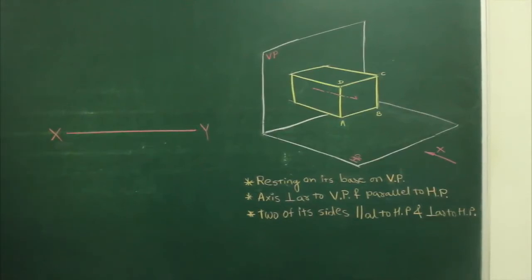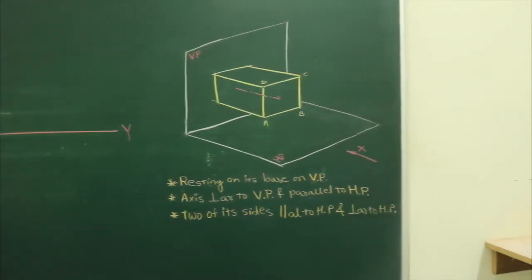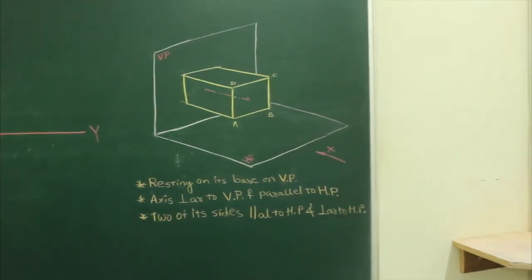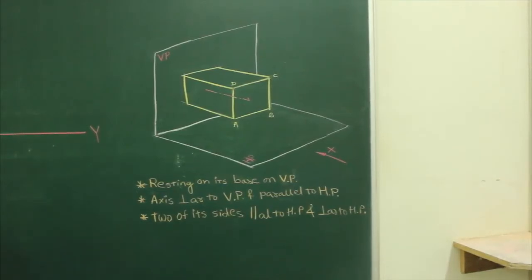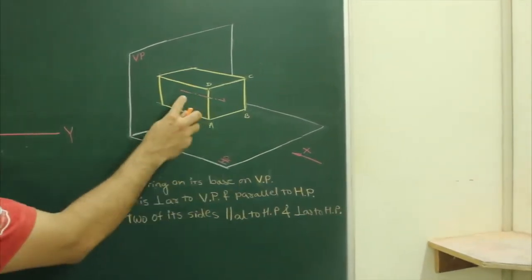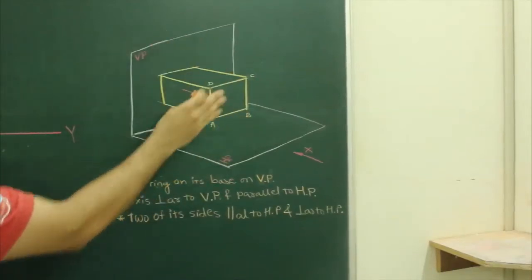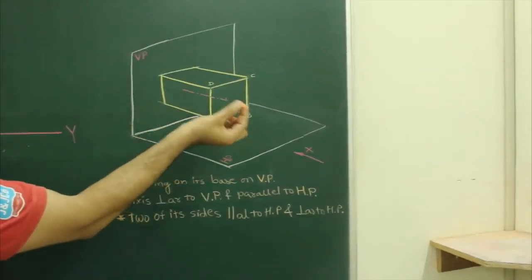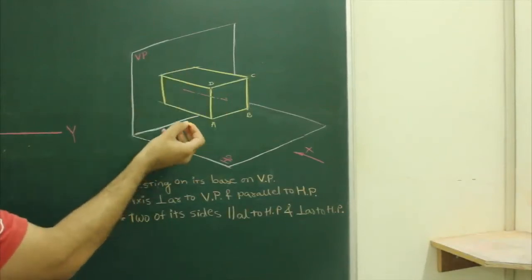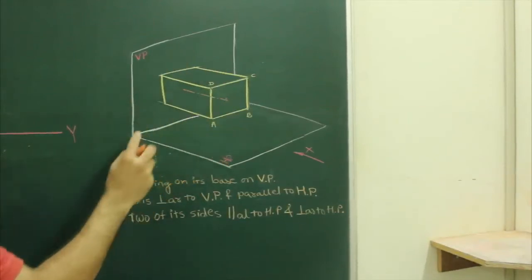In this sum, square prism is resting on its base on vertical plane with axis perpendicular to VP and parallel to HP. See this, when you see from here, you will be able to see the square because it is resting on vertical plane and axis is perpendicular to VP and parallel to HP. So front view will give you a true shape.